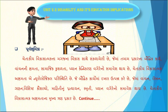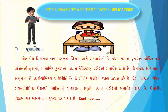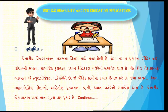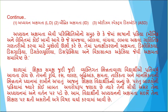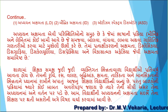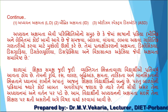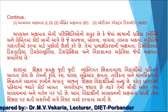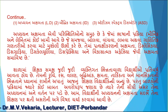જેતાકીય વિકાસાત્મક અક્ષમતાના મુખ્ય ત્રણ પ્રકાર છે: પ્રથમ, અધ્યયન અક્ષમતા (Learning Disability - LD); બીજો, બૌદ્ધિક અક્ષમતા (Intellectual Disability - ID); અને ત્રીજો, ઓટિઝ્મ (Autism). (The three main types are: Learning Disability (LD), Intellectual Disability (ID), and Autism.)